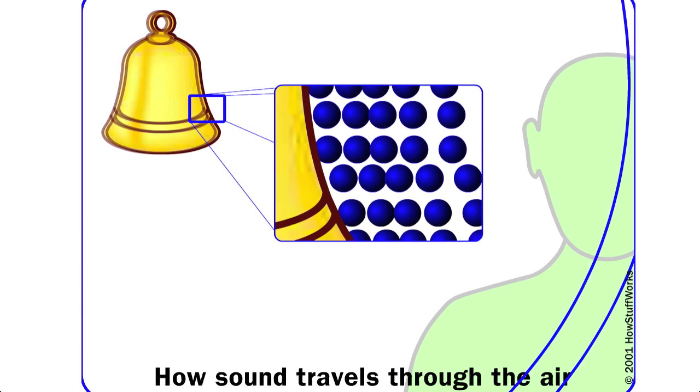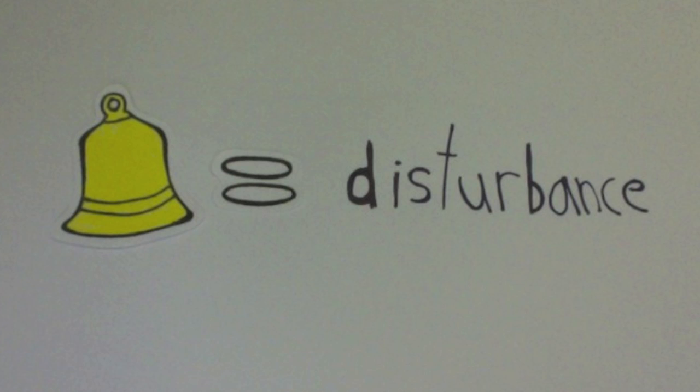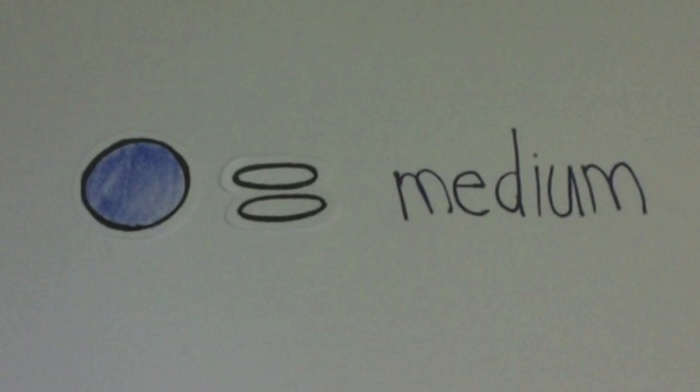As the bell flexes inward, it pulls against the adjacent air particles, which causes them to pull against other particles. The vibrating bell is the initial disturbance, and the air particles carrying on this disturbance are the medium. The push and pull pattern altogether is a sound wave.